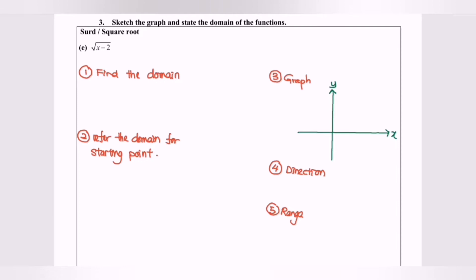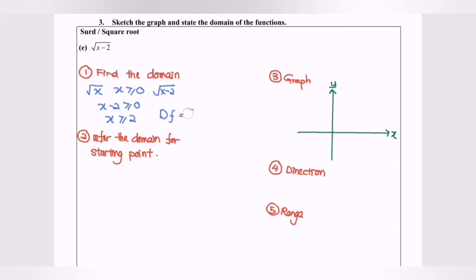For a square root function, x must be greater than or equal to zero. For this case, √(x − 2), we require x − 2 ≥ 0, so x ≥ 2. Therefore, the domain is [2, +∞).